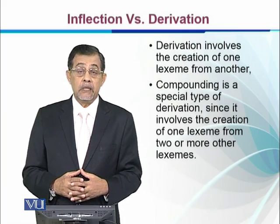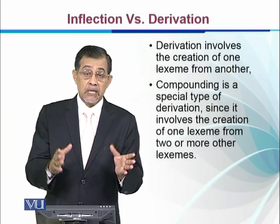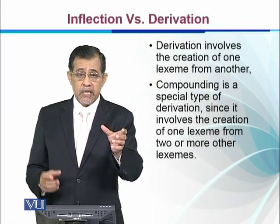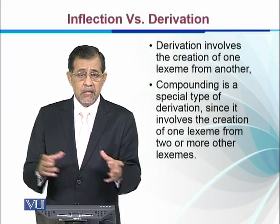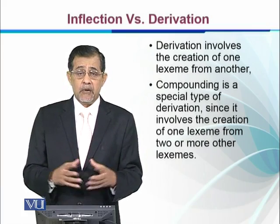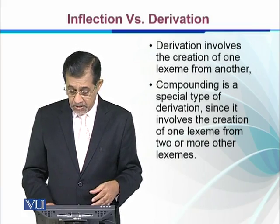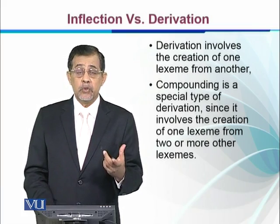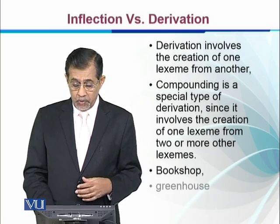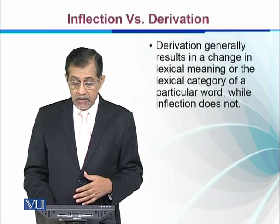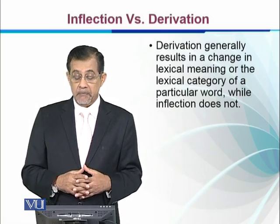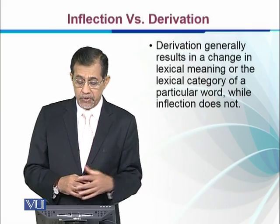Compounding is a special type of derivation, since it involves the creation of one lexeme from two or more other lexemes. For example, we take 'hot' and 'dog' to make 'hotdog', or 'green' and 'house' to make 'greenhouse'. We keep making compound words with the help of two or more lexemes, such as 'bookshop' and 'greenhouse'.